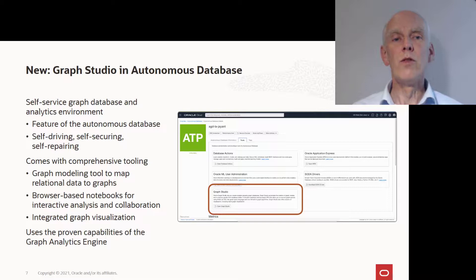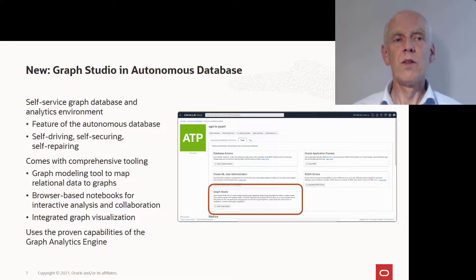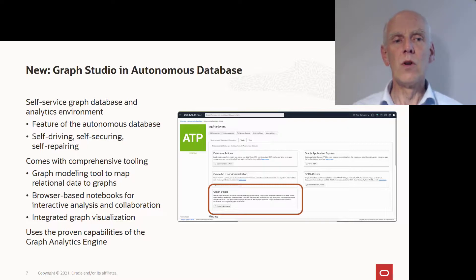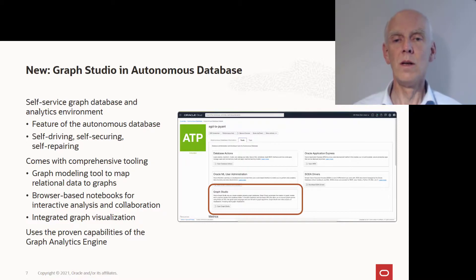To make it easy for you to get started, we have developed Graph Studio in Autonomous Database. Graph Studio is a complete self-service graph database and analytics environment. It's a feature of the Autonomous Database, which means it uses the Autonomous Database as the persistence layer and is a fully integrated, managed environment. Graph Studio includes a modeling tool to turn relational tables into a graph, a notebook-based environment to work with the graph, graph visualization inside the notebook, and it sits on top of a high-performance graph analytics engine with dedicated in-memory data structures and all built-in algorithms we've had on the market for a number of years.